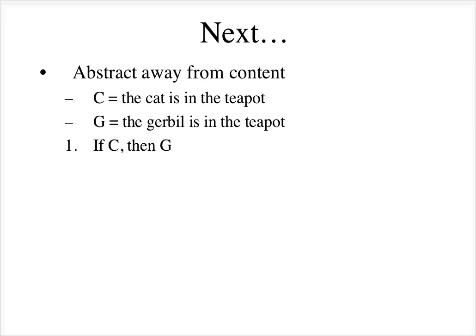We can rewrite that as: if C, then G — which is a short way of writing 'if the cat is in the teapot, then the gerbil is in the teapot.' The second premise, 'the gerbil is in the teapot,' we write as G. And the conclusion, 'the cat is in the teapot,' we write as therefore C. Now we've abstracted away from content and can just look at the form.